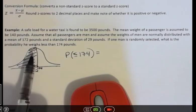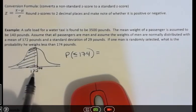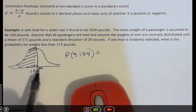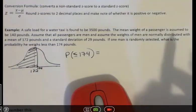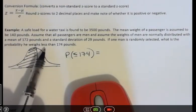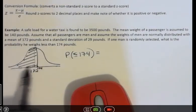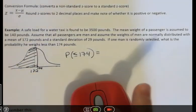So for our particular problem, the mean is 172. So instead of having zero, we have 172. And we're interested in the people that are 174 or less because it says, what's the probability he weighs less than that? So we're looking at this area, which is the kind that works out really nicely on our calculator.